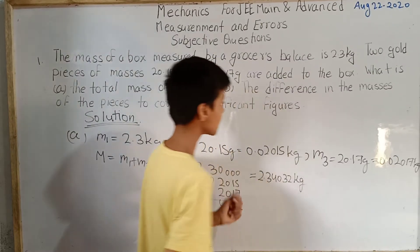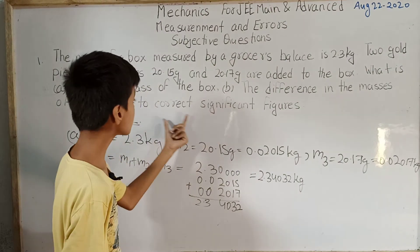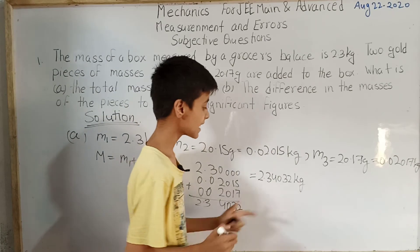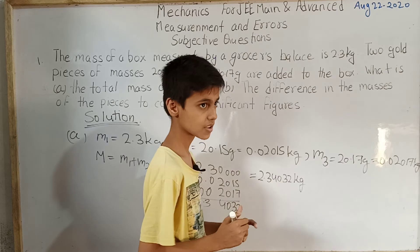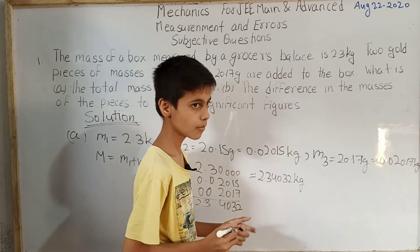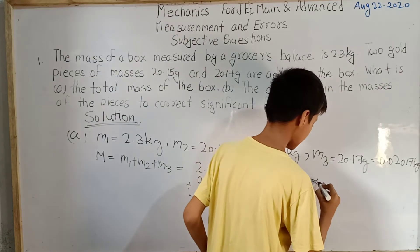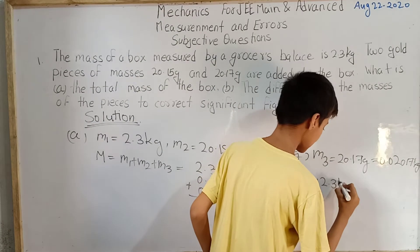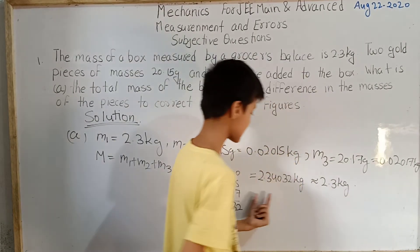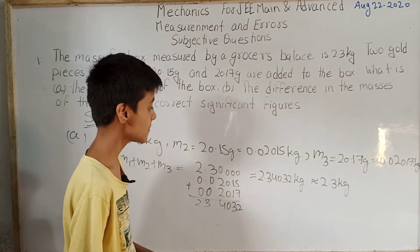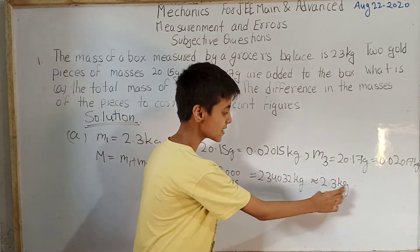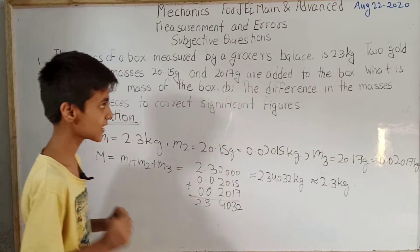Now here we have said to correct significant figures. While solving such questions we can also round them off. So while rounding it off finally we'll get 2.3 kg, because it is nearly equals to 2.3 kg. So the total mass of the box is 2.3 kg. This is the answer.